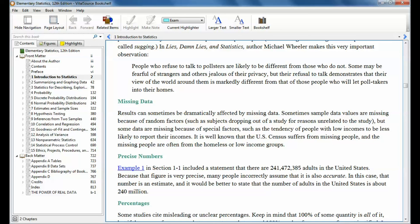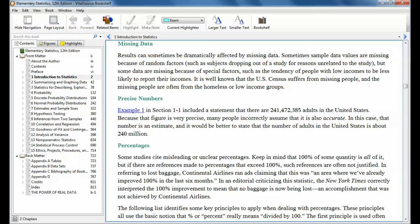Precise numbers this is kind of funny. Section 11 included a statement that there are 241,472,385 adults in the United States. That's just way too precise. Be skeptical if you hear precise numbers. Not saying that it's incorrect but a lot of times people just assume that that's accurate. You'd want to use something like maybe like 240 million or something like that. Percentages give 110%. How can you give 110%? You can't. If you give 100% that's everything. There's nothing else there. Keep that in mind. Understand percentages.